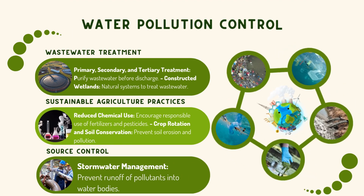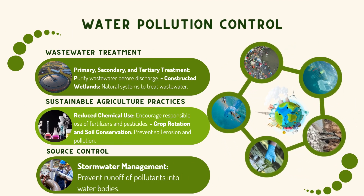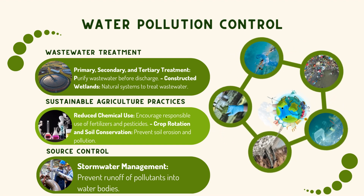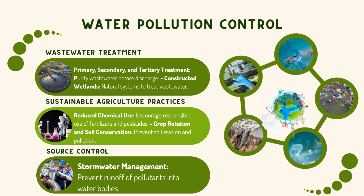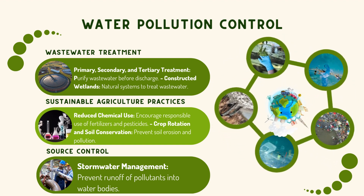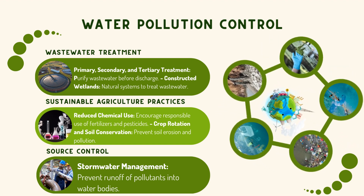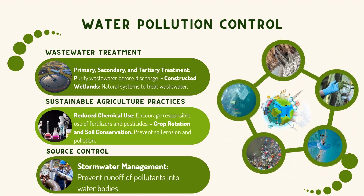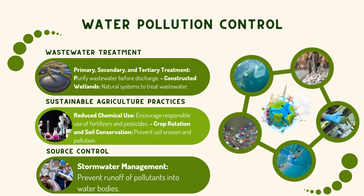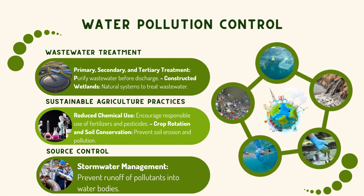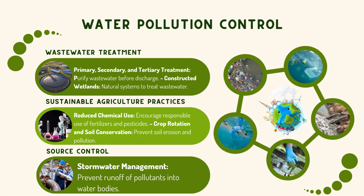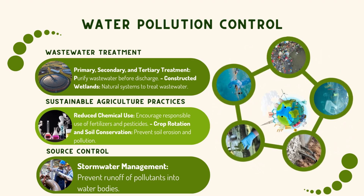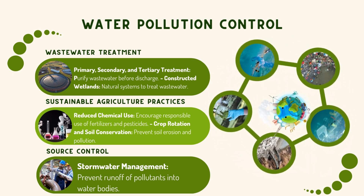In addressing water pollution, effective wastewater treatment is at the forefront. Processes like primary, secondary, and tertiary treatment ensure that wastewater is adequately purified before being released back into the environment. Sustainable agriculture practices like reducing chemical use and implementing proper stormwater management also go a long way in curbing water pollution.